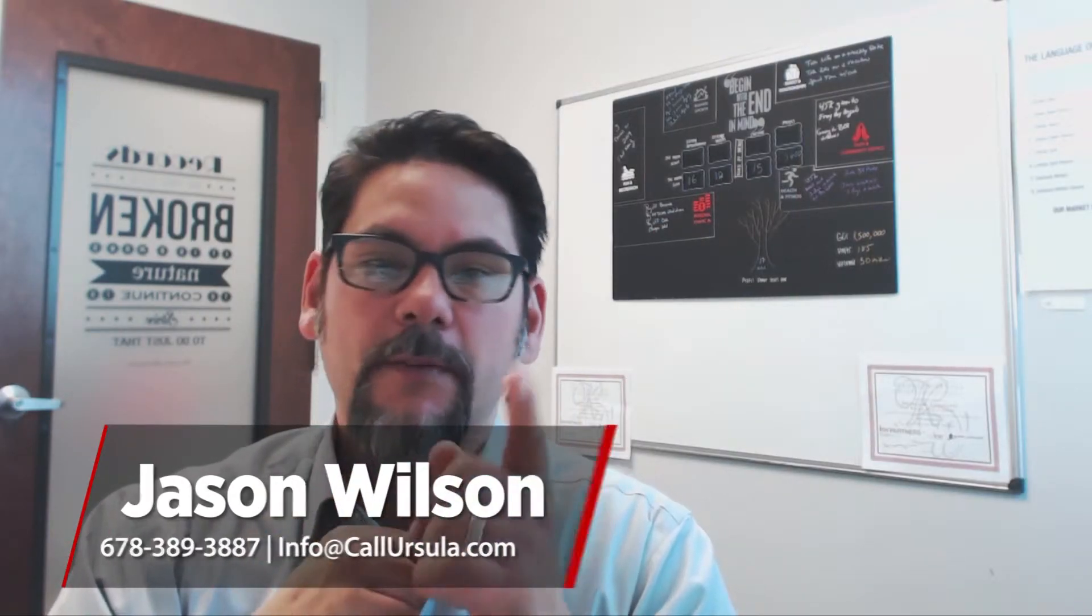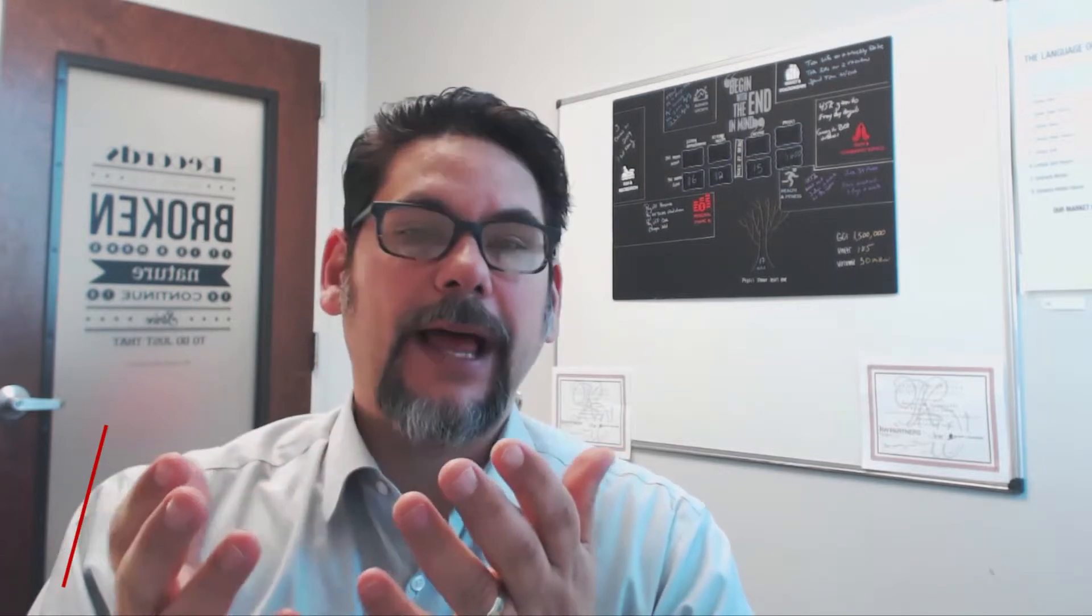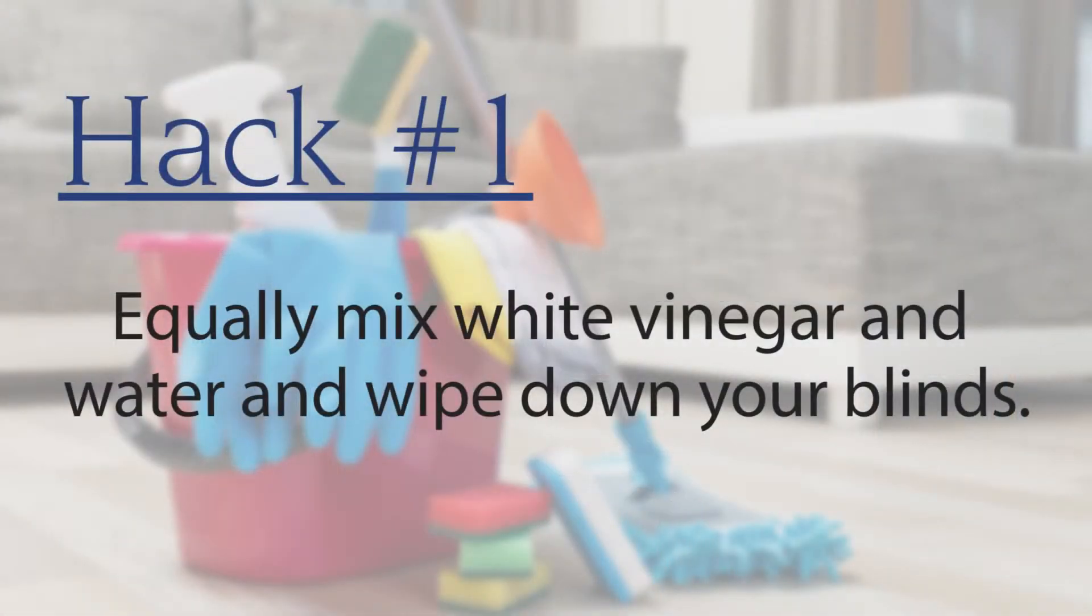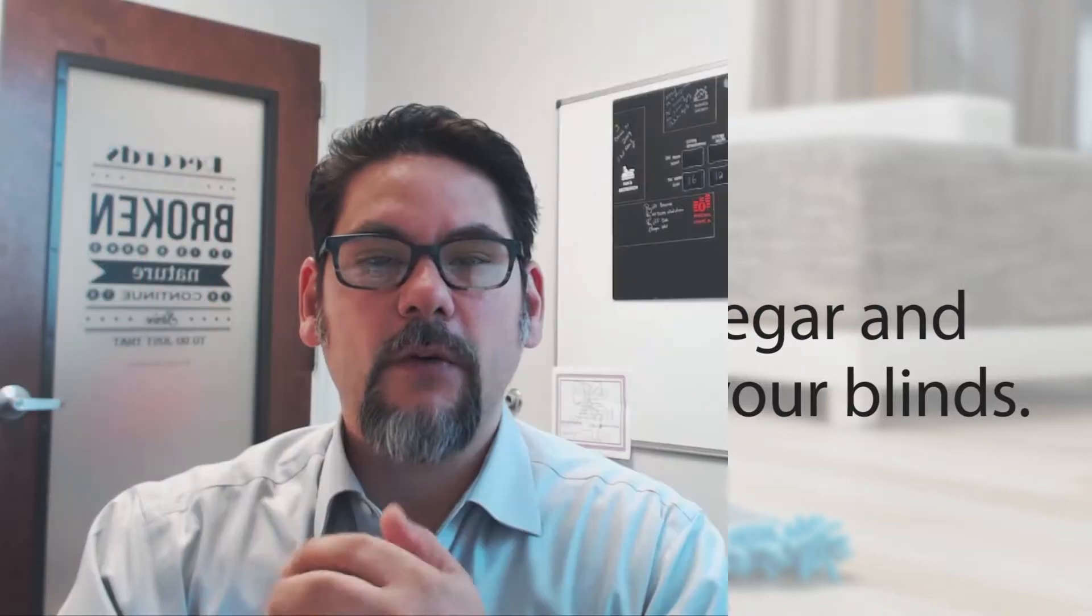Number one is how to make your blinds look like brand new again. That one's real simple. Take an old sock and make a mixture of white vinegar and water, equal parts, dip that in and wipe it down your blinds and they'll look like new. It'll take some of that yellow off and give it a nice crisp look.